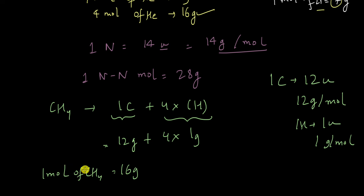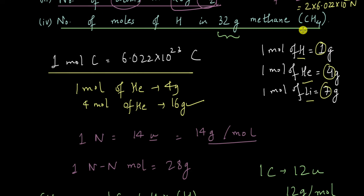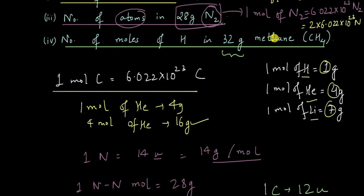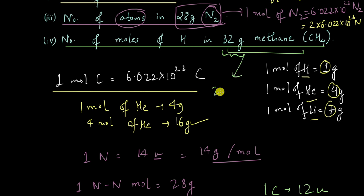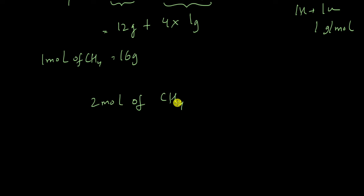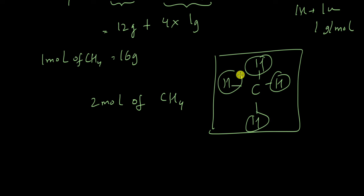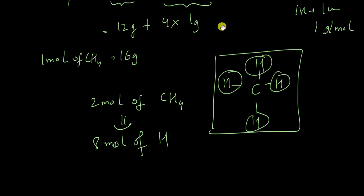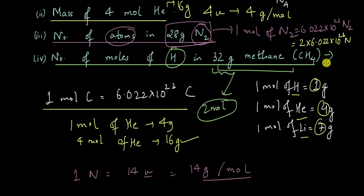We are given 32 grams of CH4, which is double 16 grams, so we have 2 moles of methane. Each CH4 molecule has four hydrogen atoms attached. So if we have one mole of CH4, we have 4 moles of hydrogen atoms. In 2 moles of CH4, we will have 8 moles of hydrogen atoms. For each methane molecule there are four hydrogen atoms, so for two moles of CH4 we get eight moles of hydrogen atoms.